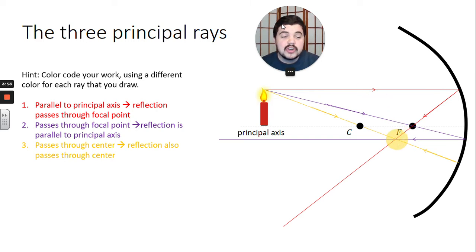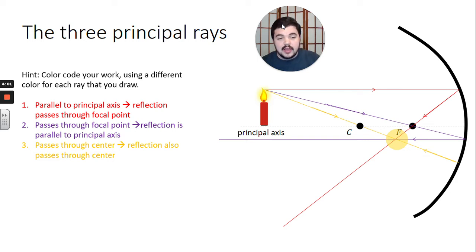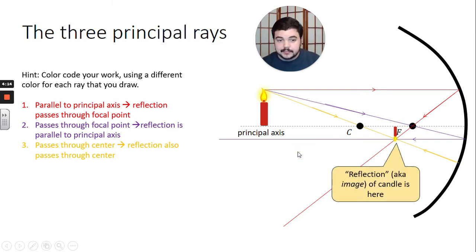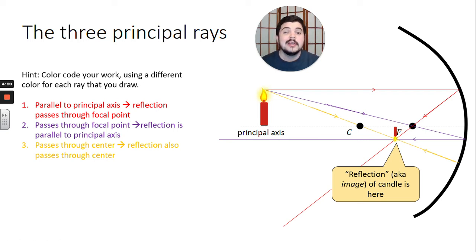Those are our three light rays and they all converge at one point. It turns out that every single light ray from this candle that bounces off the mirror is going to converge at that point, and so we get an image of our candle there — that's where our eyes would see it. Most people call what you see in a mirror the reflection; the physics word we're going to use is image.